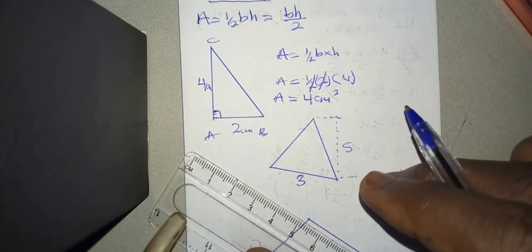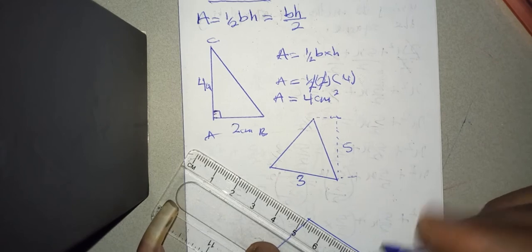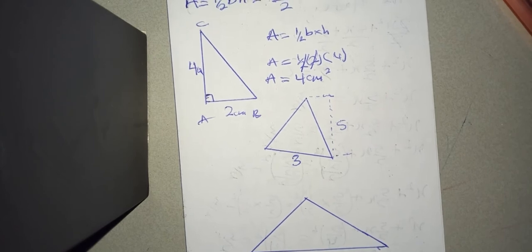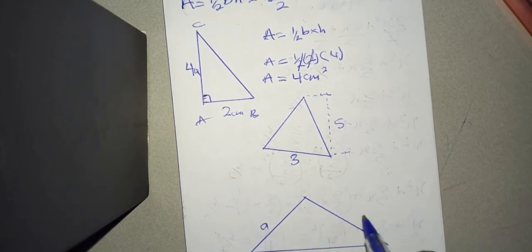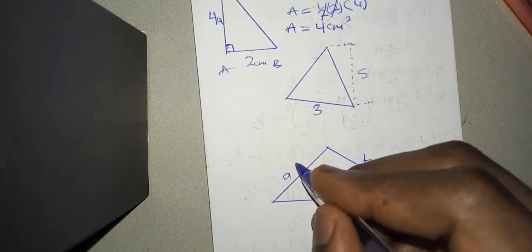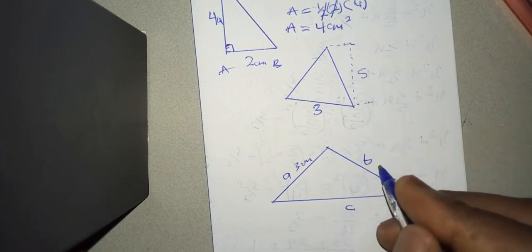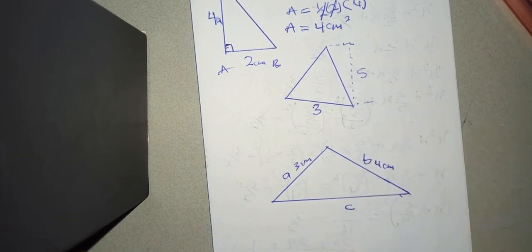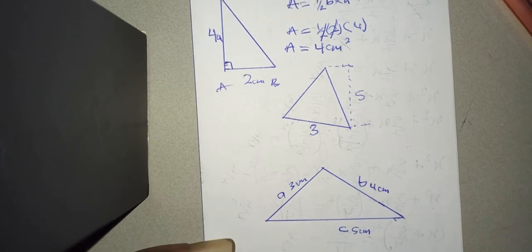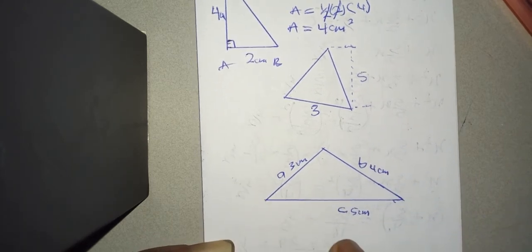Now assuming you are given another type of triangle — let me extend this. All right, so we have this triangle with vertices A, B, and C. Assuming A is 3 centimeters, B is 4 centimeters, and C is 5 centimeters — how do you calculate the area of this triangle? Pause the video if you want to give it a try; if not, kindly stay and follow me.